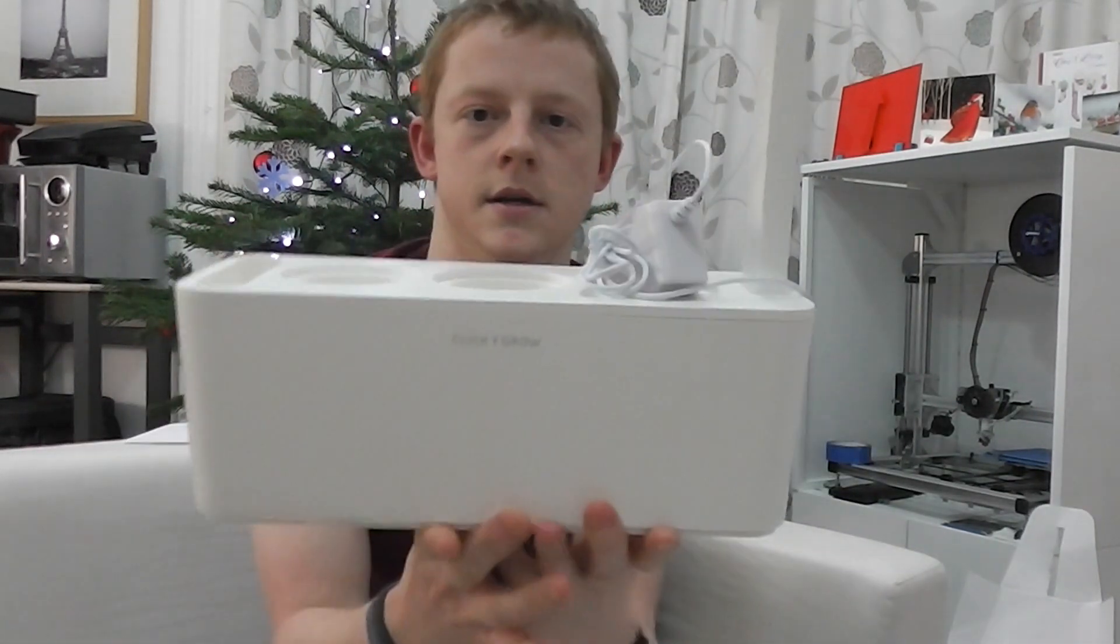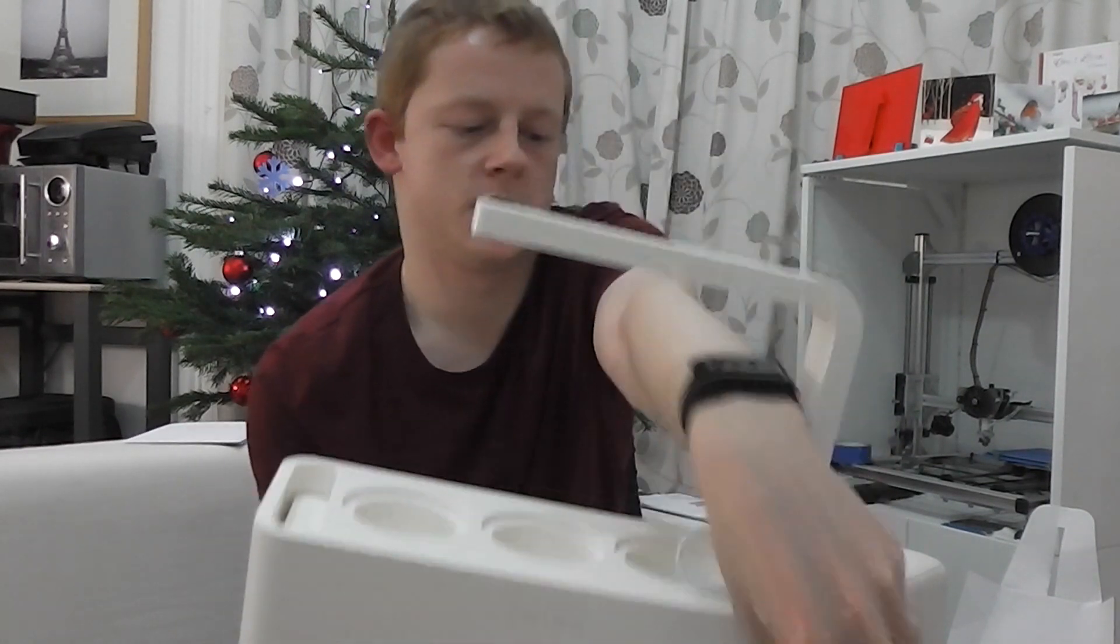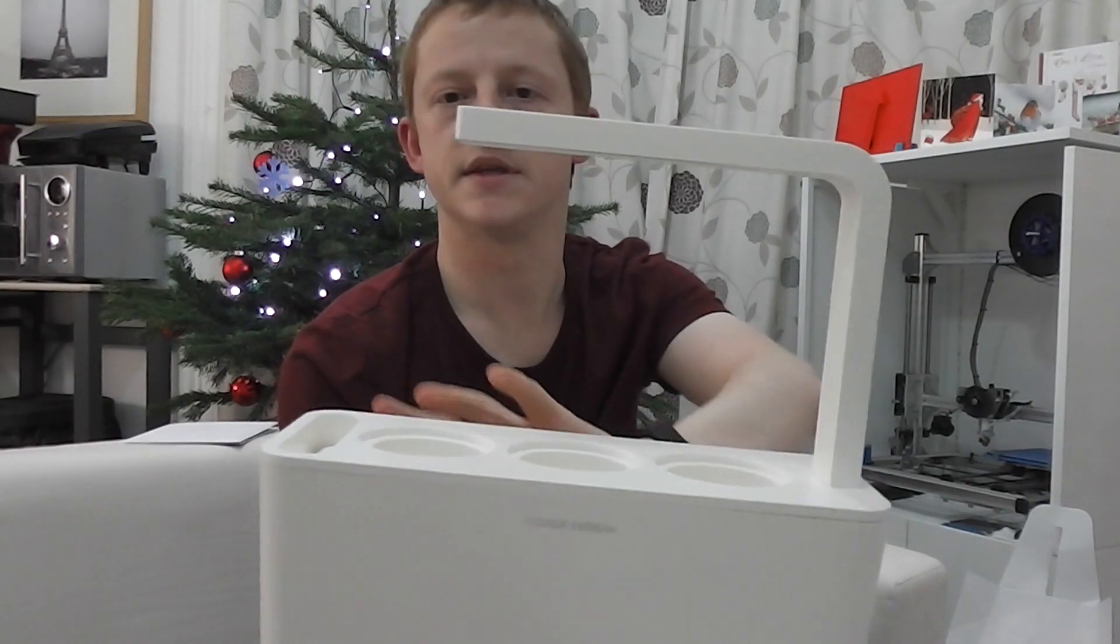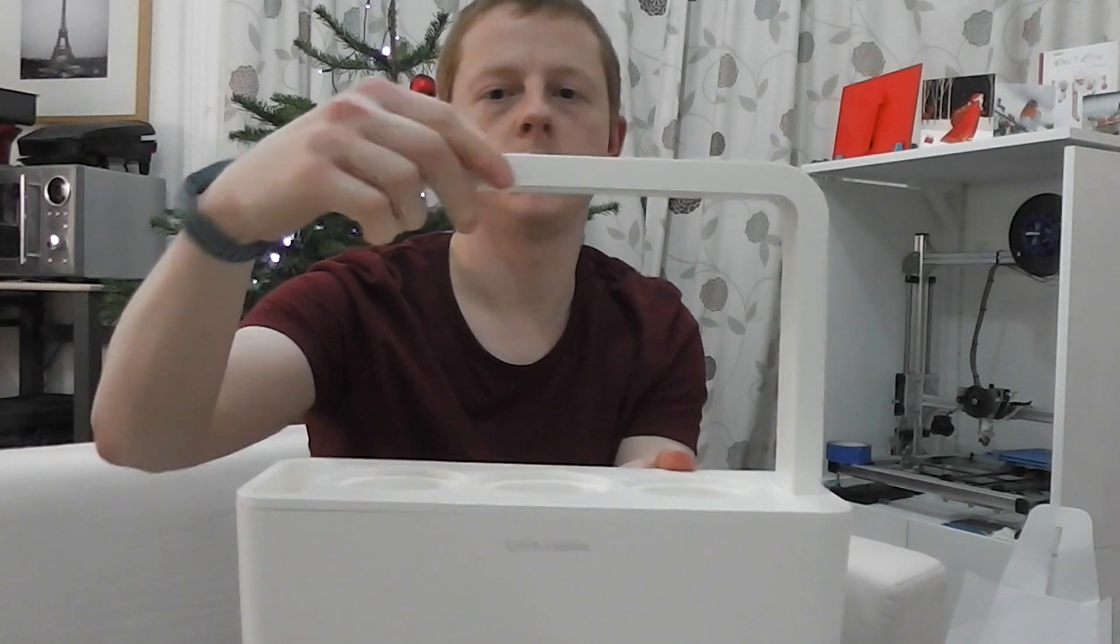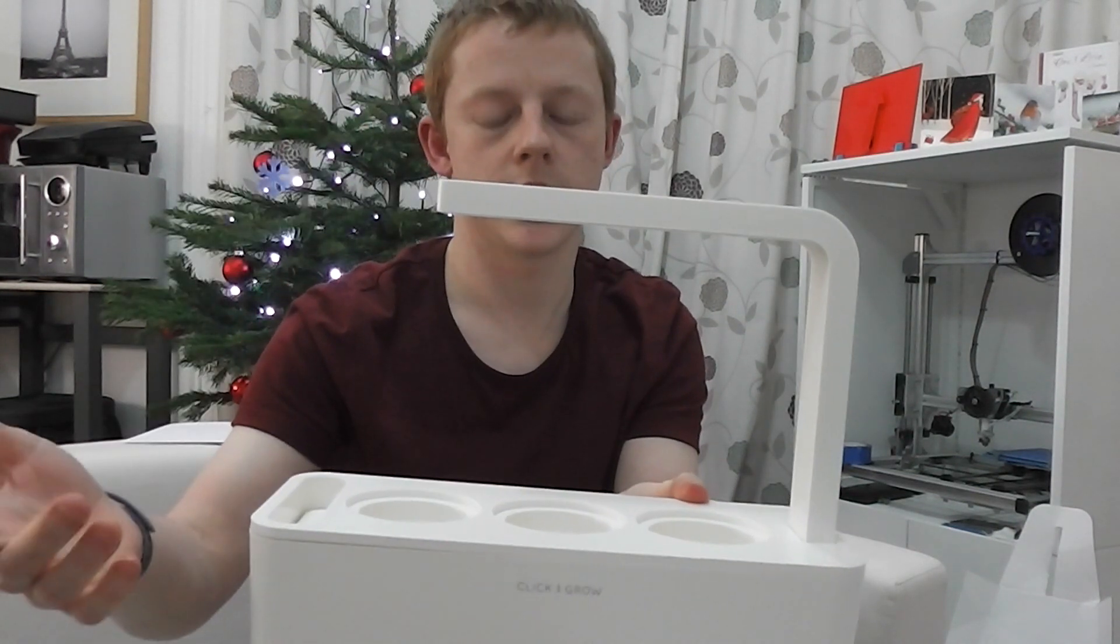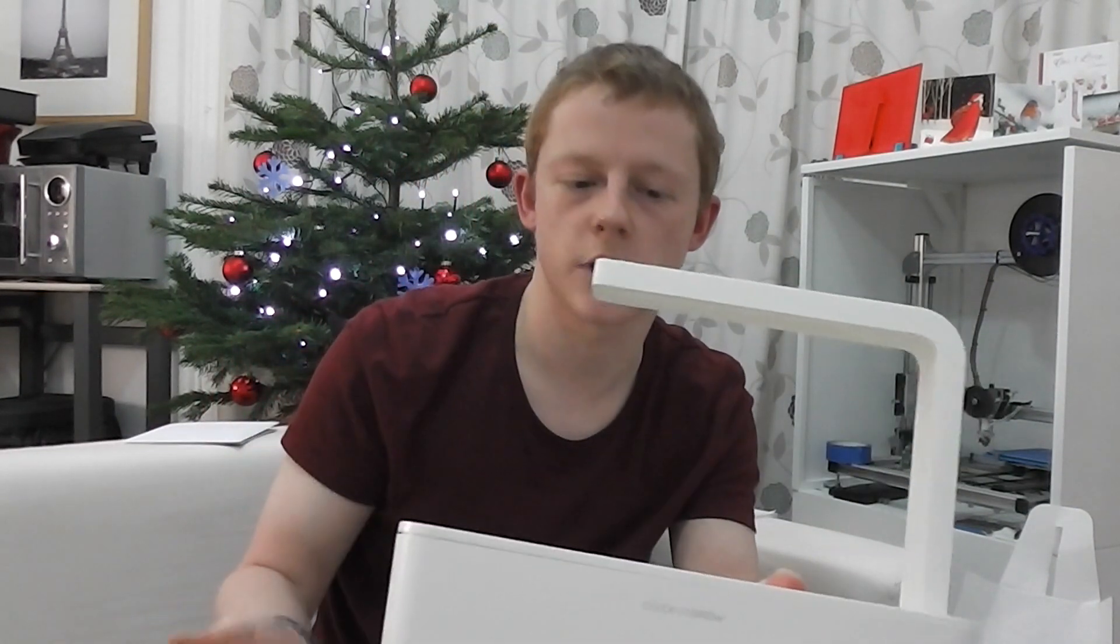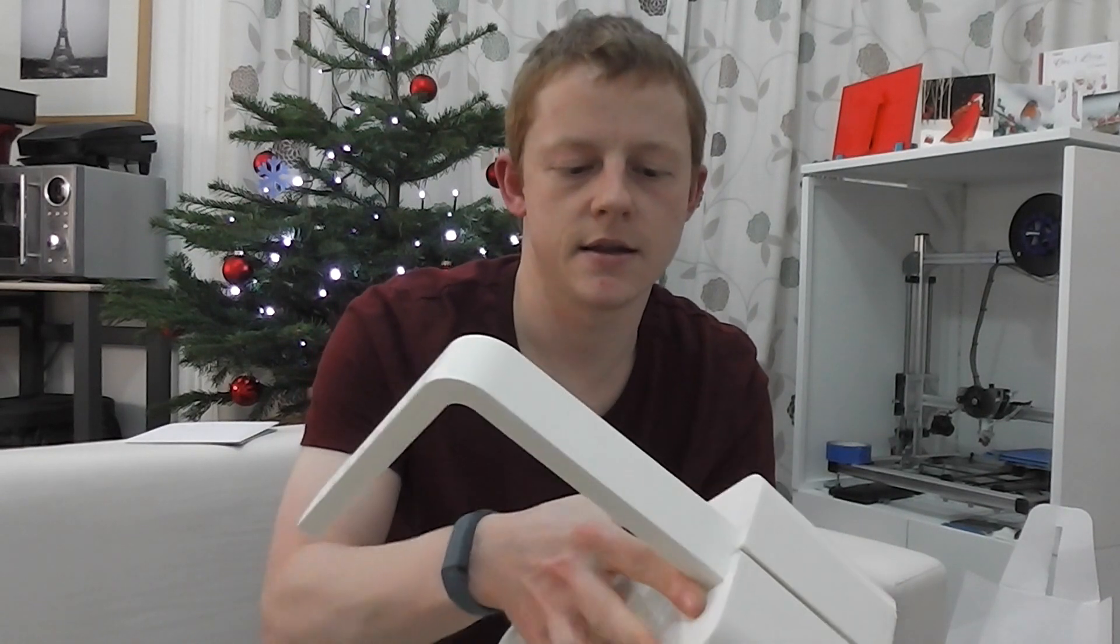And the actual unit is like this. So you've got support for three plants to go in there. Water fills up in this base section here. And it's got the light on top to provide illumination all year out. And there's an indicator of some sort to show that the water level is dropping. And I'm going to take a proper look at that.